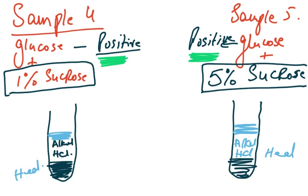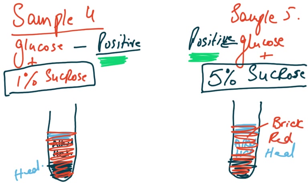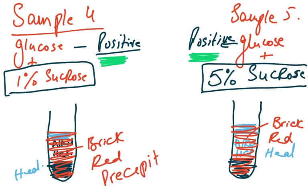After this procedure, the final color may be brick red in both samples. You might argue that one is a darker brick red and the other a lighter brick red, but that visual judgment is unreliable. The key point is that brick red is a precipitate, so a more objective method is needed.